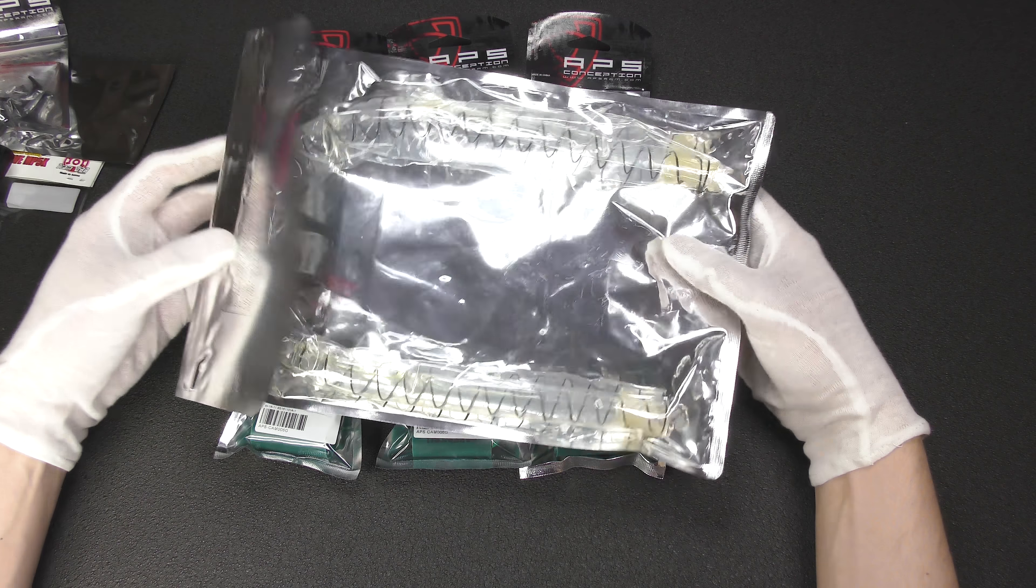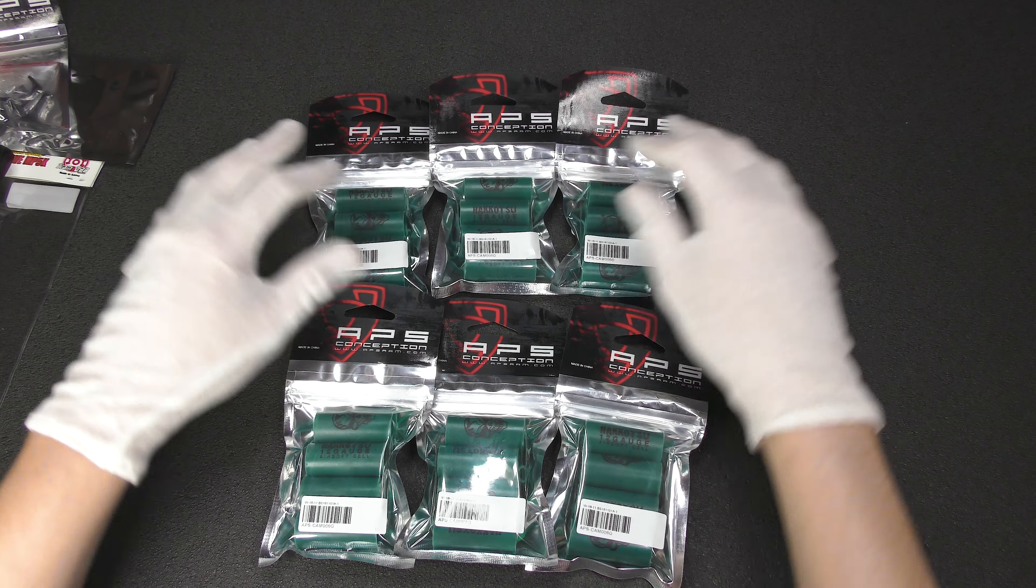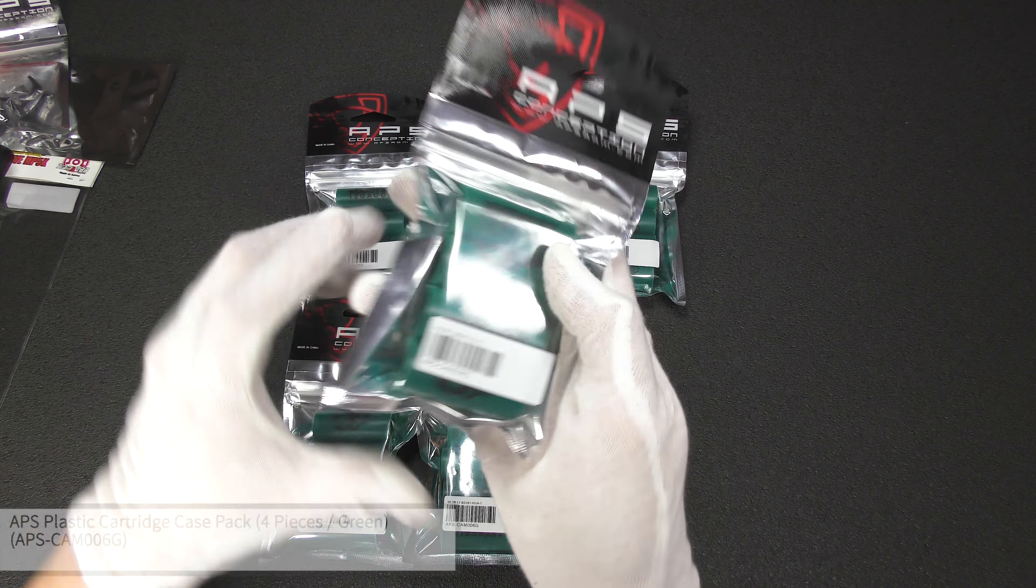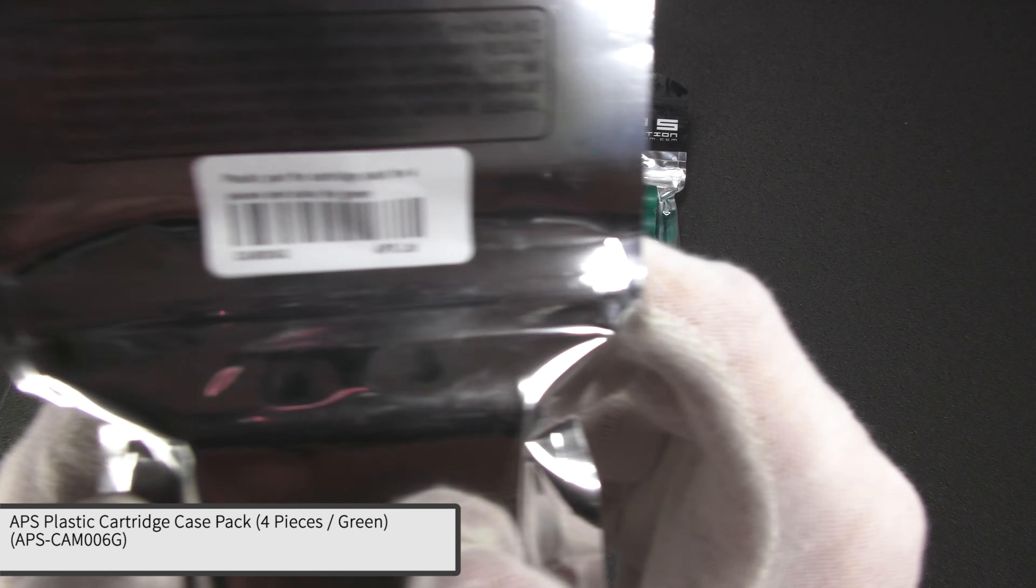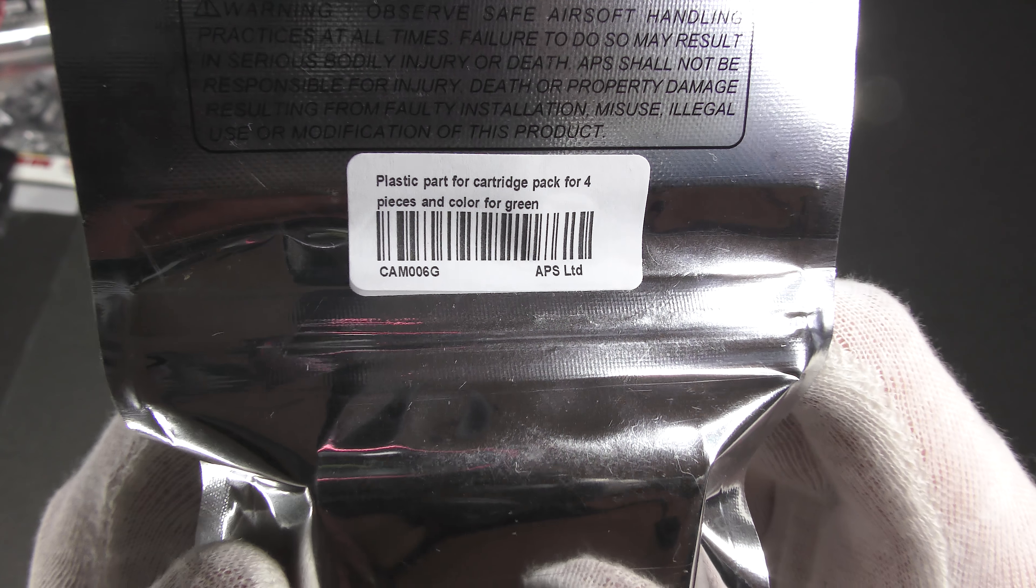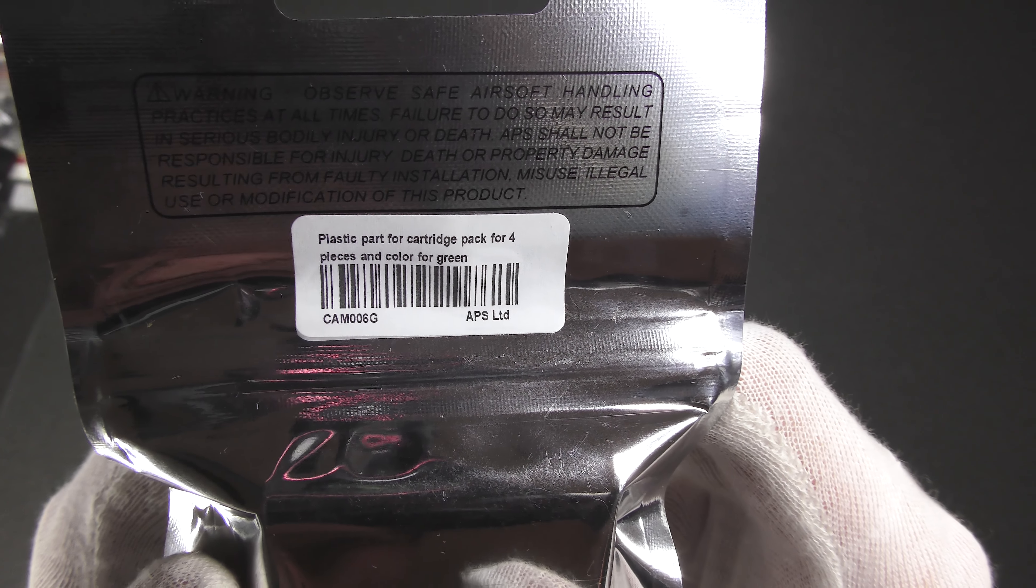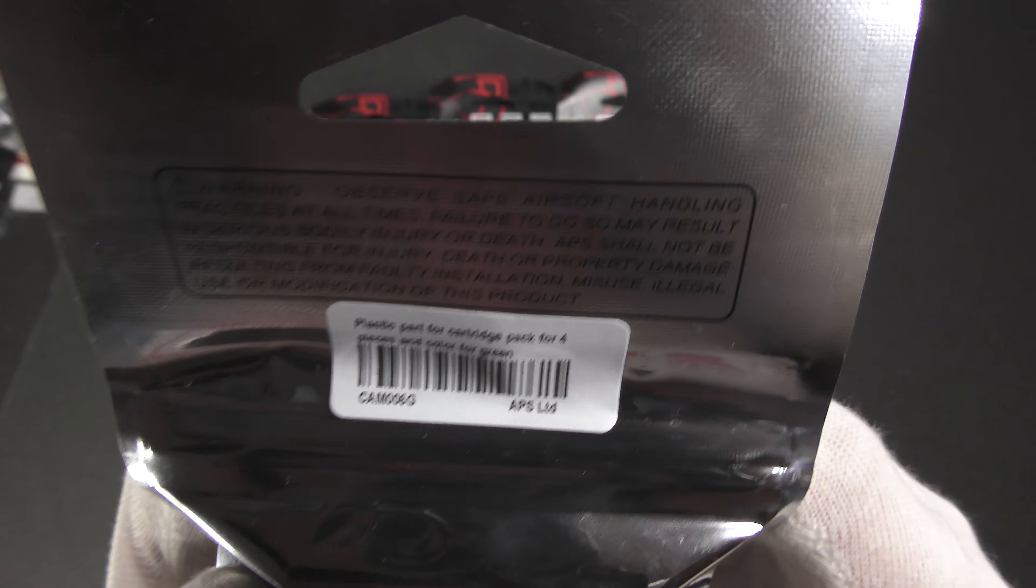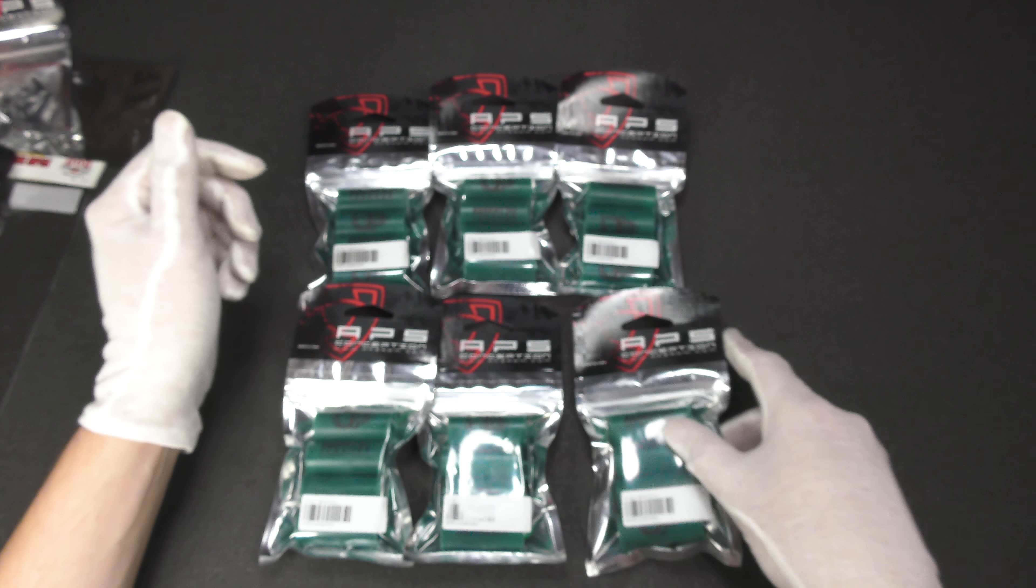Next up, we have six packs of four green shell covers. Let's see, these are plastic part for cartridge pack for what, plastic part for cartridge pack for four pieces and color for green. That is an interesting description to say the least.